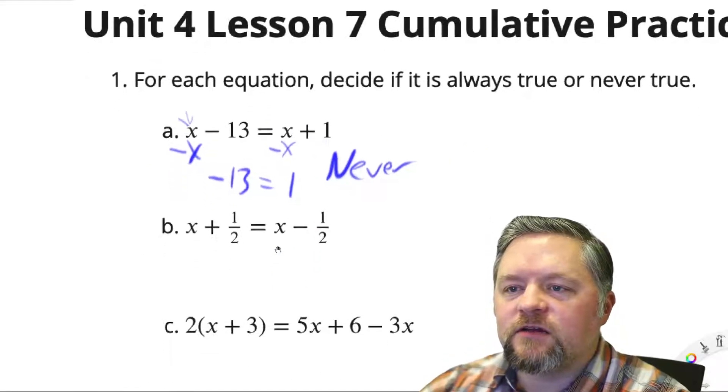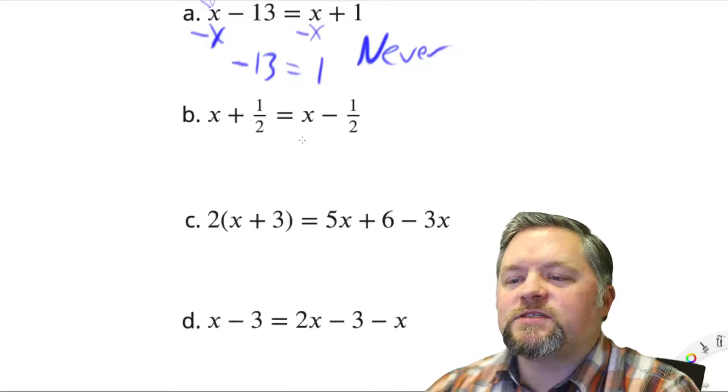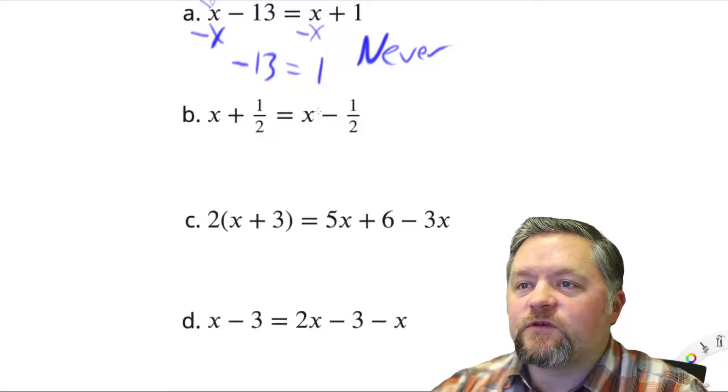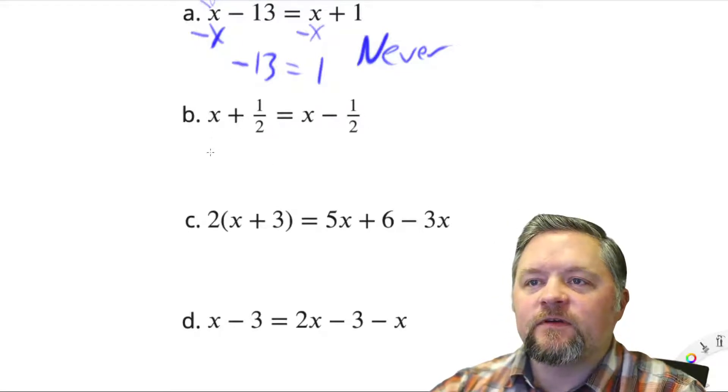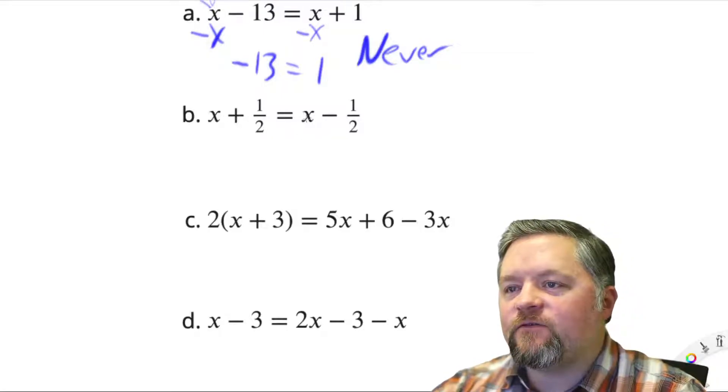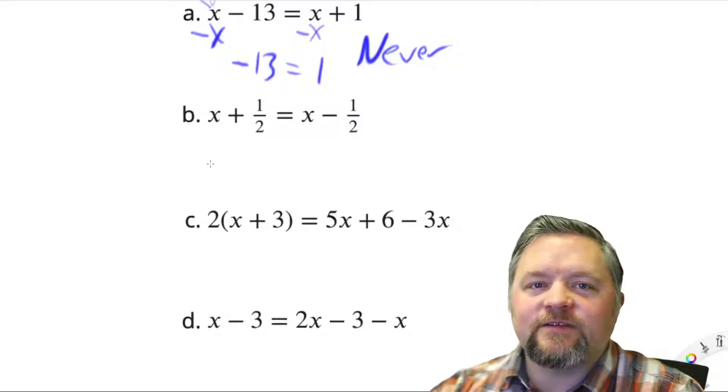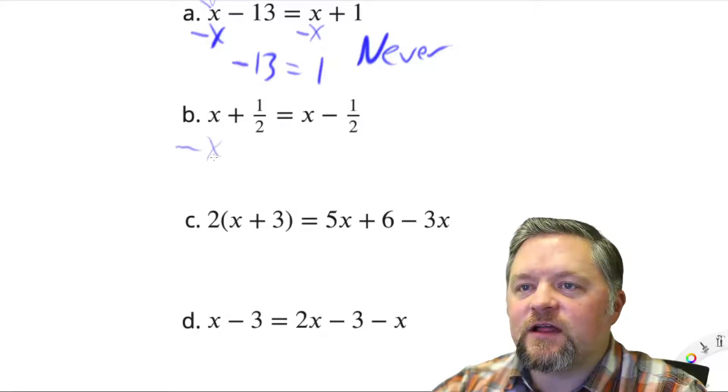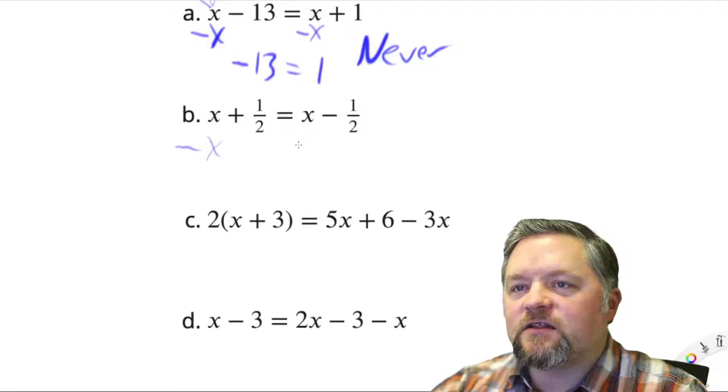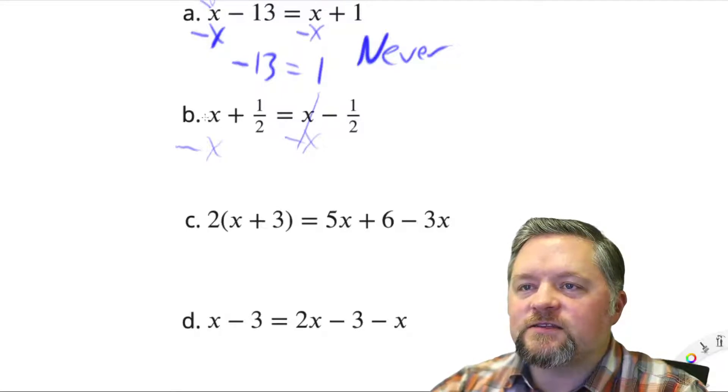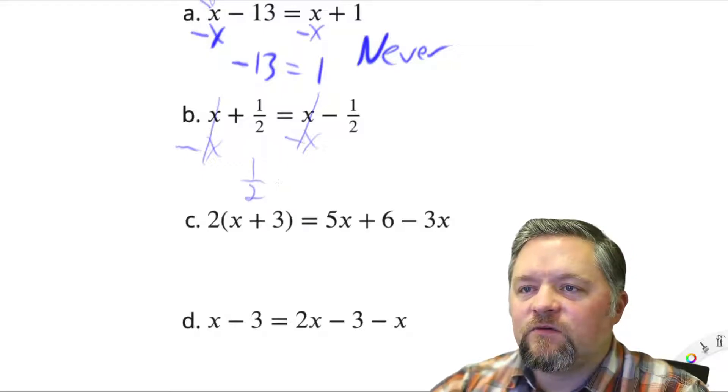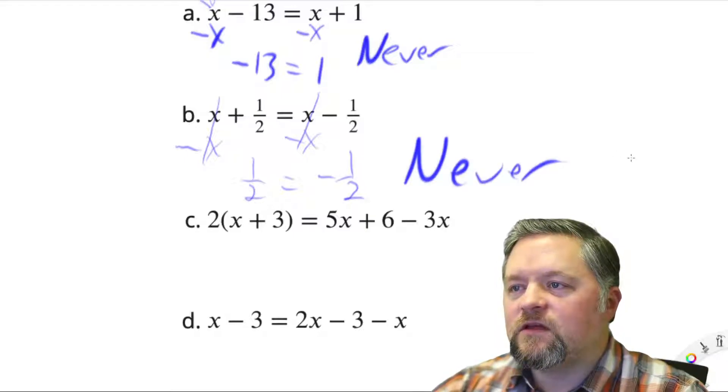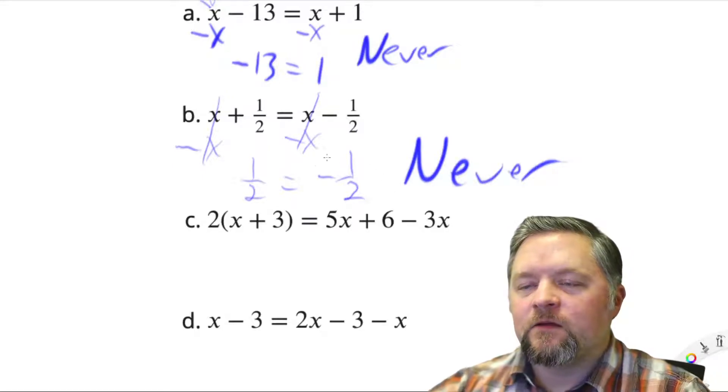Next one looks like x plus 1 half equals x minus 1 half. Looking at that quickly, I'm pretty sure that you can't add 1 half to a number and get the same thing as taking away 1 half. Let me try solving it. Get rid of the x's on the left, they're going to cancel out on both sides. And then we have 1 half equals negative 1 half. That doesn't seem like it would work to me.